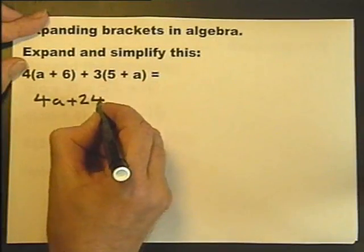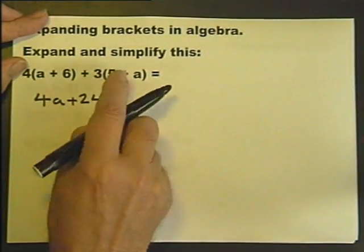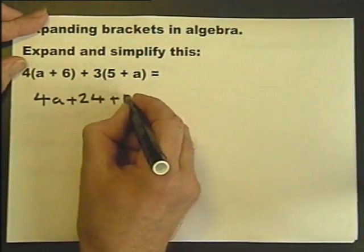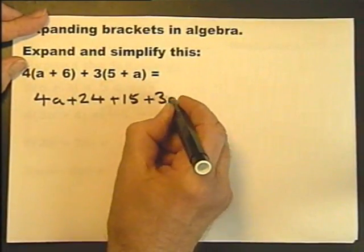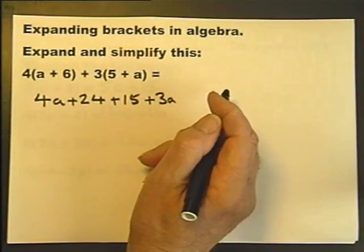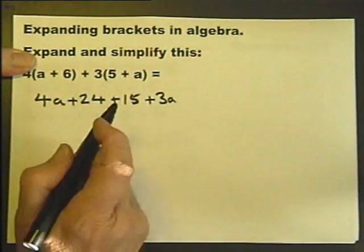Plus 3 times 5, and plus 3 times plus A. So that's expanded the brackets, or removed the brackets. Now we need to simplify.